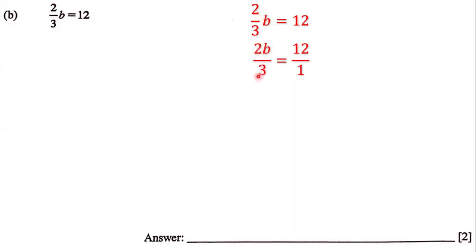Then we're going to put the 3 at the bottom and this equals to 12 over 1. We put the 12 over 1 because every whole number can be written as a fraction just by putting 1 as the denominator.